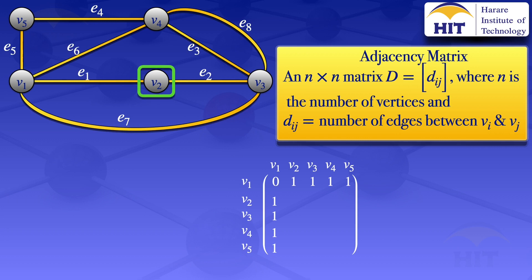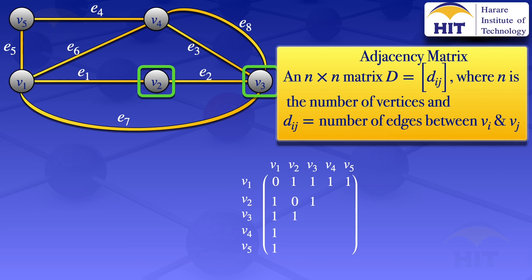For v2: between v2 and v2 there is no loop, so we put zero. Between v2 and v3, there is one edge, e2, so we put a one at v2,v3 and also at v3,v2.